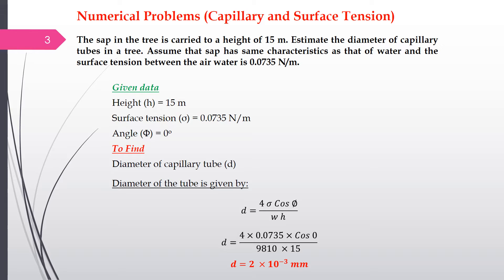The given data: height h is 15 meters and surface tension is also given. The contact angle is not given, so we assume the contact angle between the surface and the water is 0 degrees. We have to find out the diameter of the capillary tube.